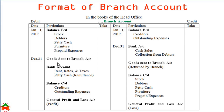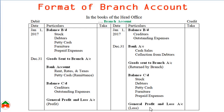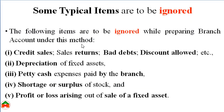This is the format of the branch account already discussed while showing journal entries. The debit side shows: opening balances of assets, goods sent to branch by the head office, checks paid by the head office to the branch for expenses, closing balances of liabilities, and profit if any. The credit side shows: opening balances of liabilities, payment of check by the branch to the head office, cash sales, cash collection from debtors, goods returned from branch to head office, closing balances of assets, and loss if any.